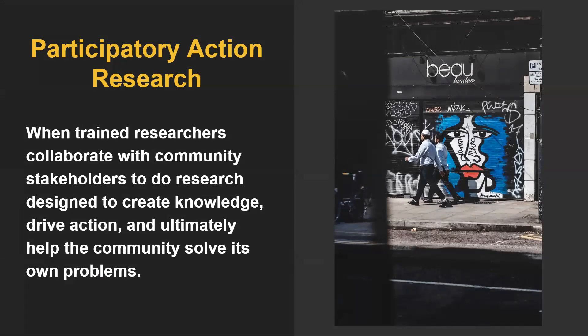Our next example is feminist participatory action research. Participatory action research (PAR) is what happens when formally trained researchers collaborate with stakeholders from local communities to do research specifically designed to create knowledge, drive action, and ultimately help a community solve its own problems. Community stakeholders are full partners at every step of the research process, from selecting the research question all the way to sharing findings. Participatory action researchers also work to correct power imbalances — in particular how knowledge flows to and from the community whose problems are being researched.